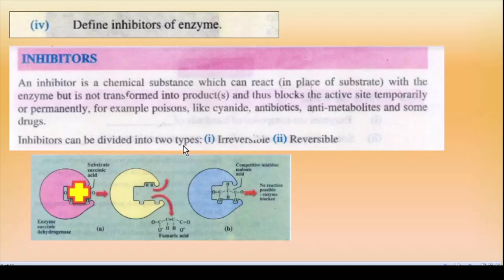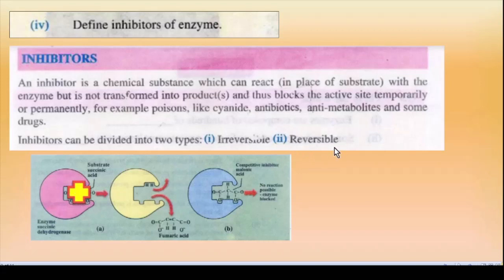Inhibitor ko do groups mein divide karte hain: irreversible aur reversible. Irreversible inhibitor: ek dafa attach hone ke baad permanently enzyme ko kharab kar deta hai. Reversible inhibitor: thodi der ke liye attach hota hai, phir wapas chala jaata hai — substrate ki jagah ban jaati hai aur enzyme baad mein use ho sakta hai. Yeh permanently active site ko block nahi karta.